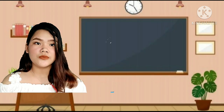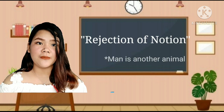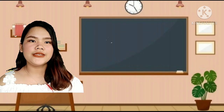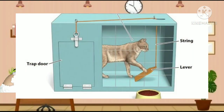The second contribution was his rejection of the notion that man is simply another animal that can reason. Here is the example of Thorndike's puzzle box. The graph demonstrates the general decreasing trends of the cat's response time with each successive trial.